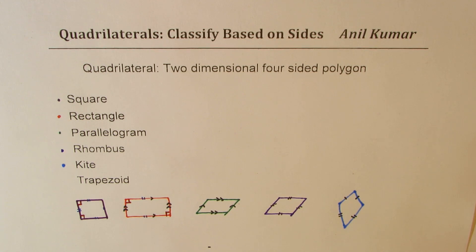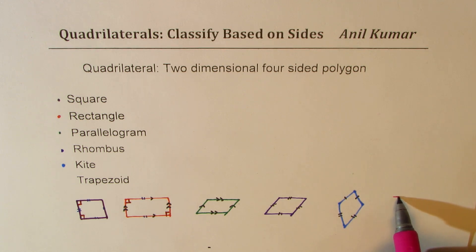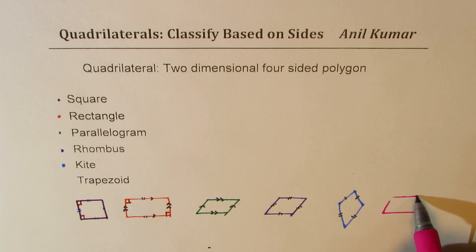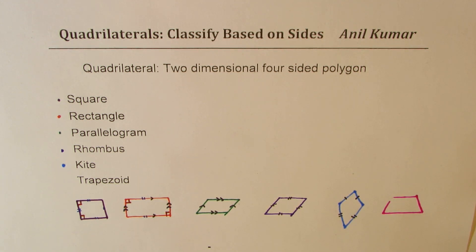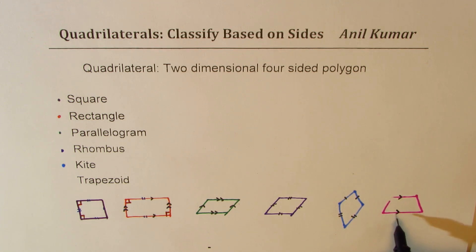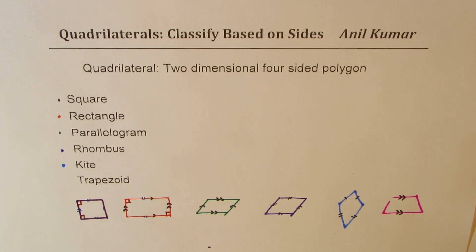In the case of a trapezoid, we have one pair of parallel sides. We may or may not have 90-degree angles between intersecting lines, but definitely we will have at least one pair of parallel sides. So that becomes a trapezoid.